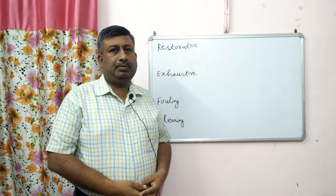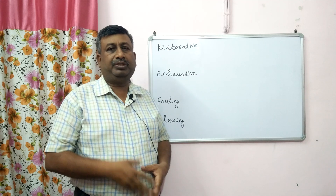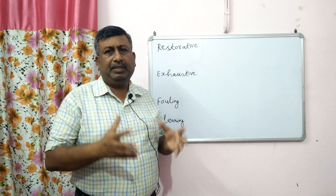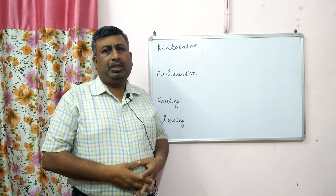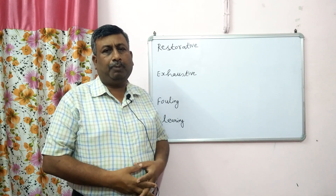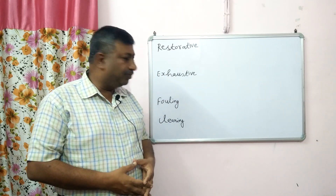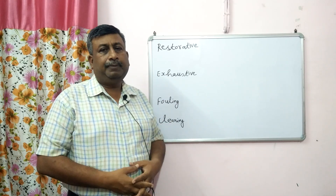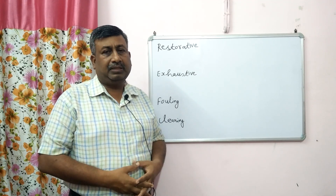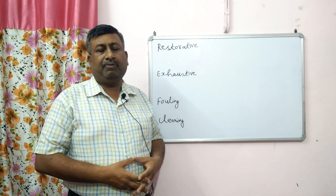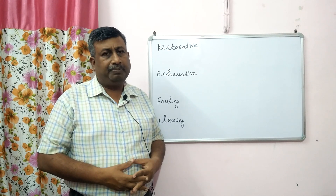In general, in examinations some examples of crops are asked — which crop is related to which example, what is the purpose of the crops, and different types of questions are asked about the objective and usefulness of crops. So there are four types of crops: restorative crop, exhaustive crop, fallow crop, and cleaning crop. What are these four types, their examples, and their advantages, disadvantages, and features?